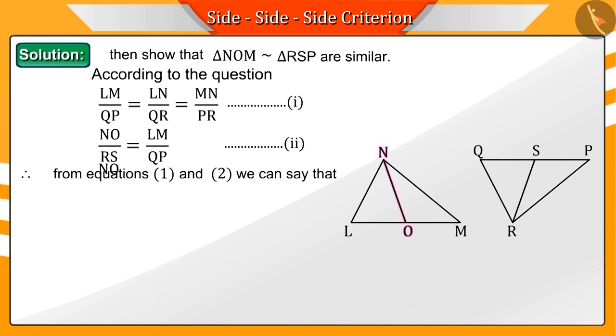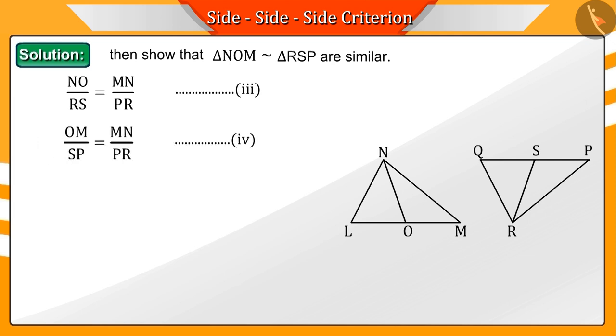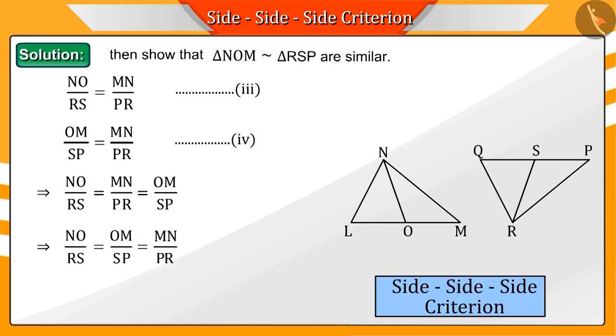Hence, from equations 1 and 2, we can say that NO/RS = MN/PR, which is represented by equation 3. If we compare equations 3 and 4, we get NO/RS = MN/PR = OM/SP. Therefore, by the SSS criterion, triangles NOM and RSP are similar.